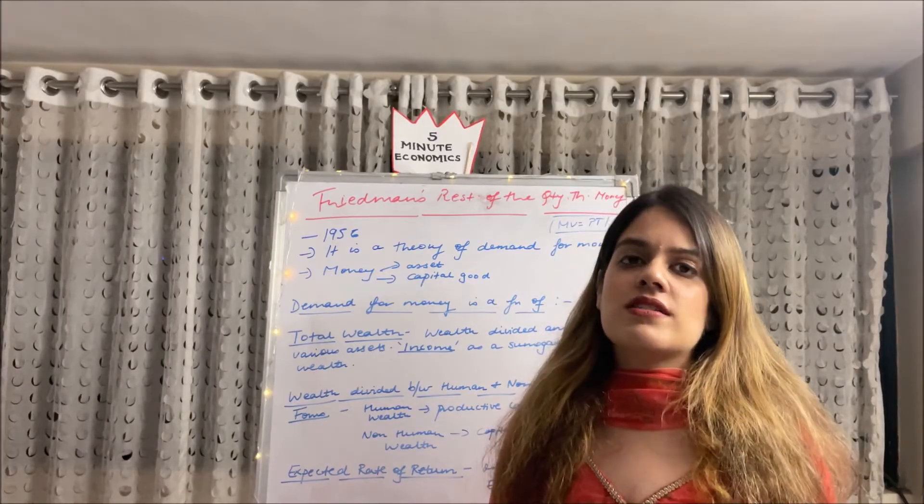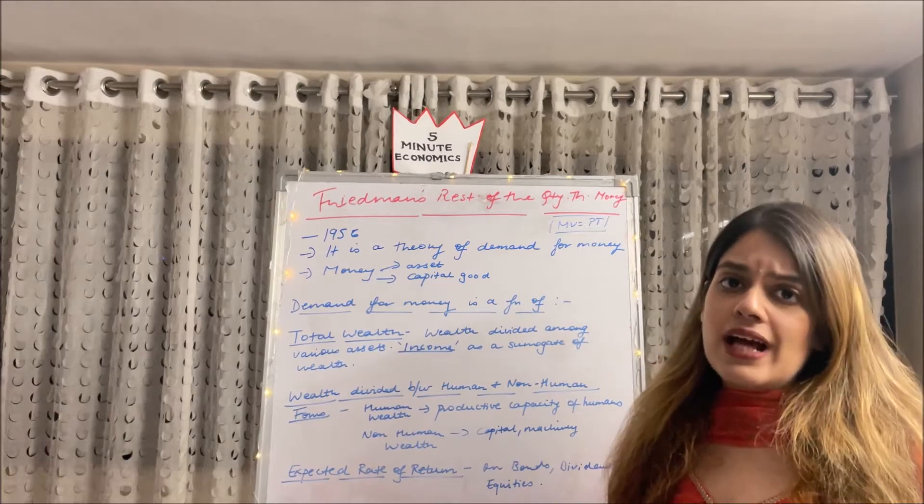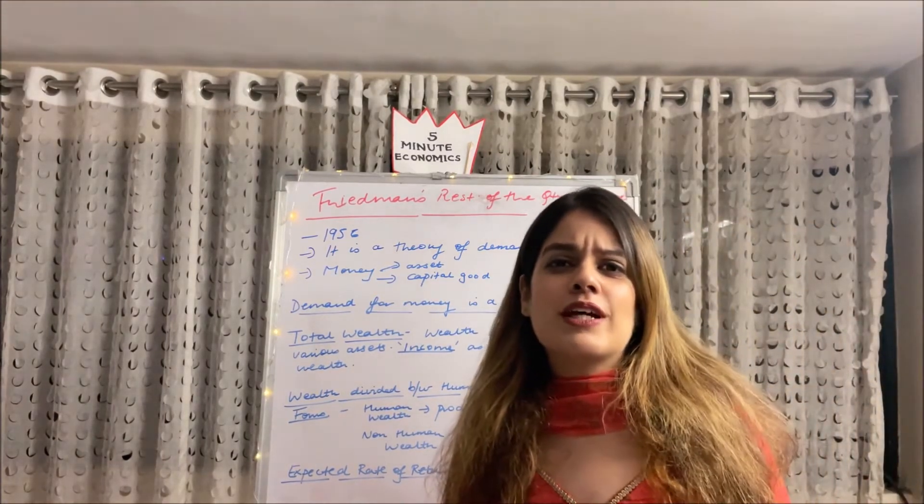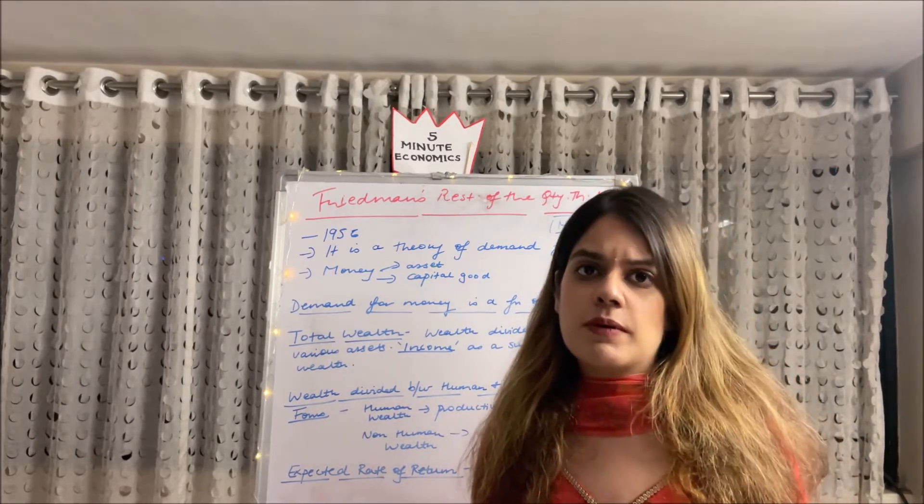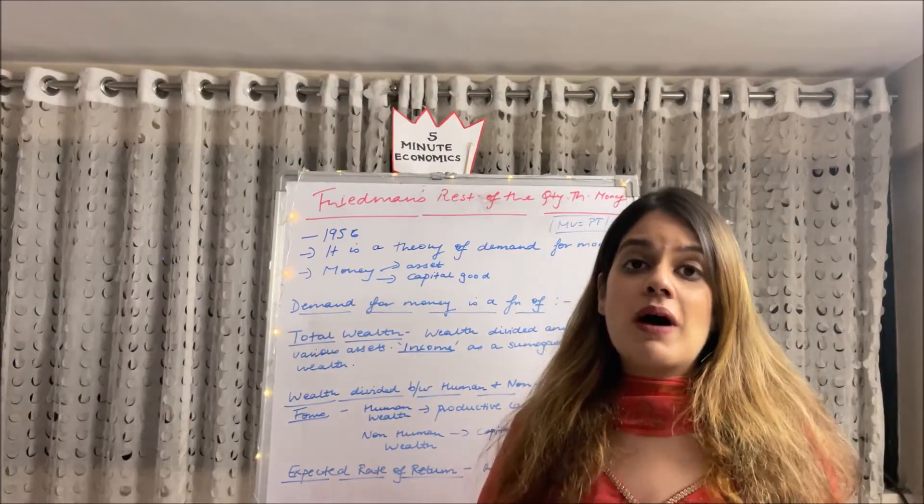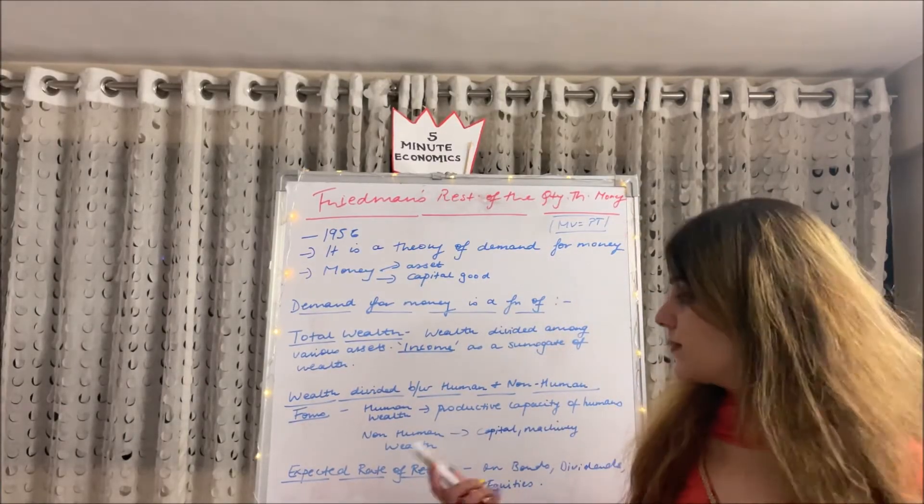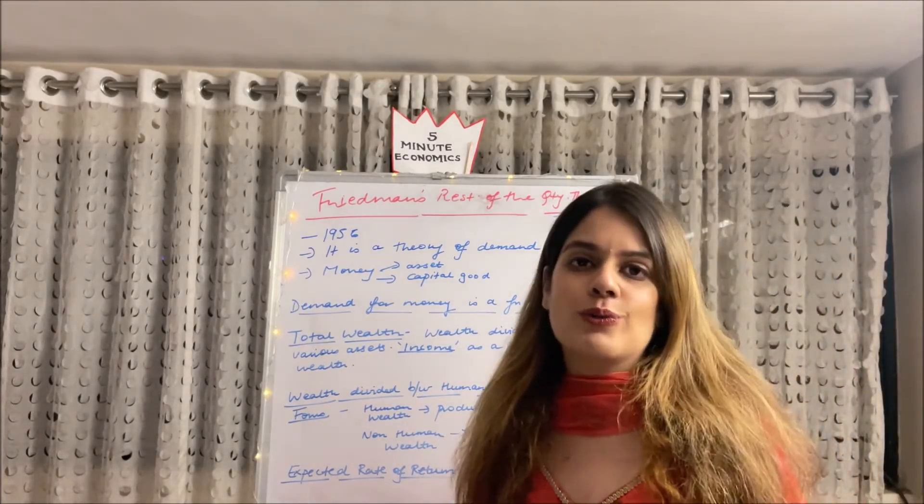Secondly he also said that wealth is divided into human and non-human factors. Human wealth is basically the productive capacity over one's lifetime. Maybe my skill, my education, that is my human wealth. Whereas non-human wealth maybe money put into capital, machinery, that is called non-human wealth.